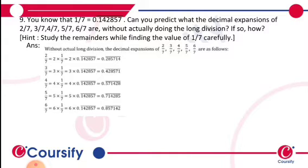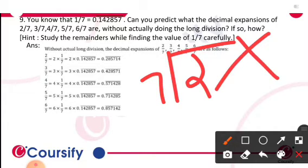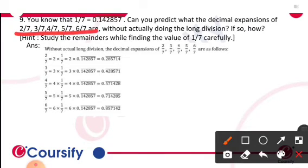It is asked that we can't do the long division like 2/7, but we have to find the answers. So how is it possible? There's a hint that says study the remainders while finding the value of 1/7 carefully.